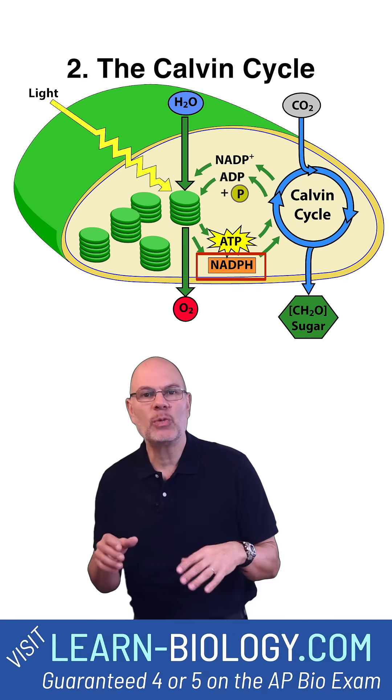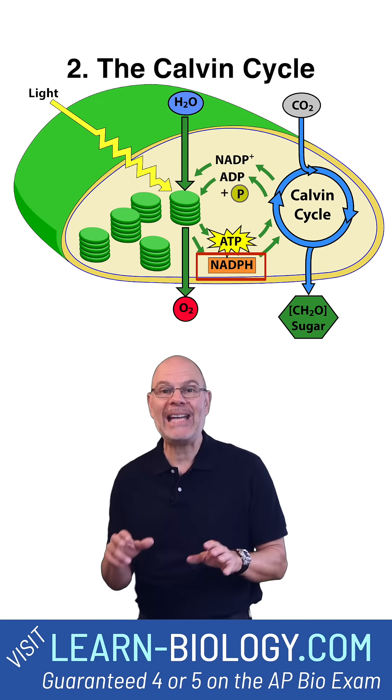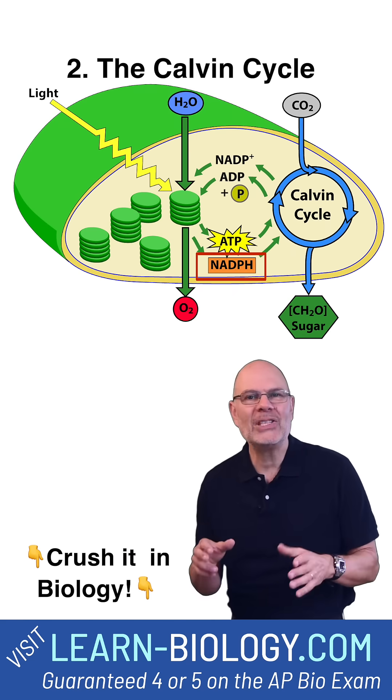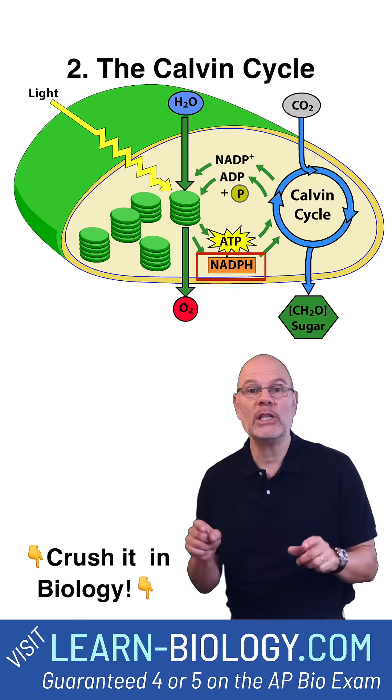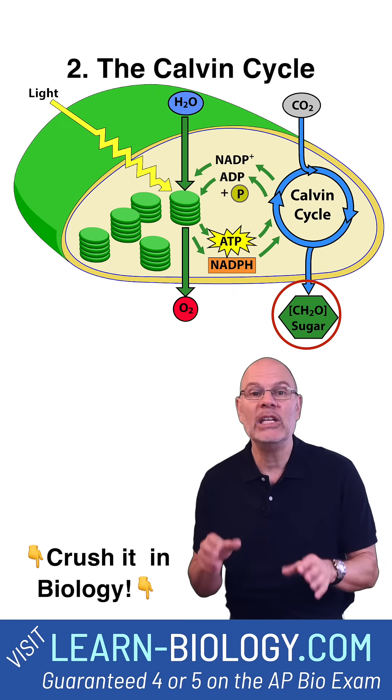NADPH is what's called a mobile electron carrier. Its job is to bring electrons and hydrogens to the stroma, where enzymes use its reducing power to transform carbon dioxide, the third input for the Calvin cycle, into carbohydrate.